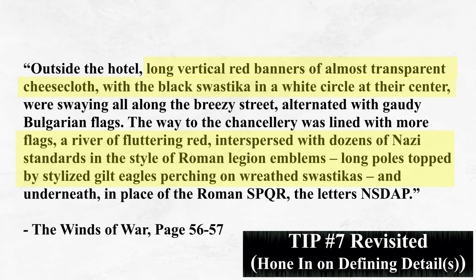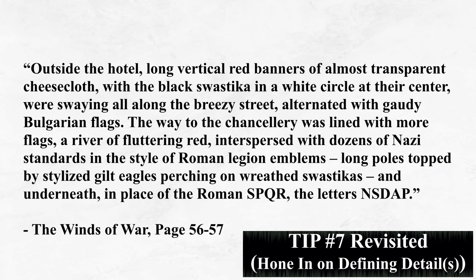Similarly, Wouk describes Berlin in Nazi Germany by focusing almost exclusively on the swastika flags, as this is what stands out most about the setting. 'Outside the hotel, long vertical red banners of almost transparent cheesecloth with the black swastika in a white circle at their center were swaying all along the breezy street, alternated with gaudy Bulgarian flags. The way to the chancellery was lined with more flags, a river of fluttering red, interspersed with dozens of Nazi standards in the style of Roman Legion emblems — long poles topped by stylized gilt eagles perching on wreathed swastikas, and underneath, in place of the Roman SPQR, the letters NSDAP.'